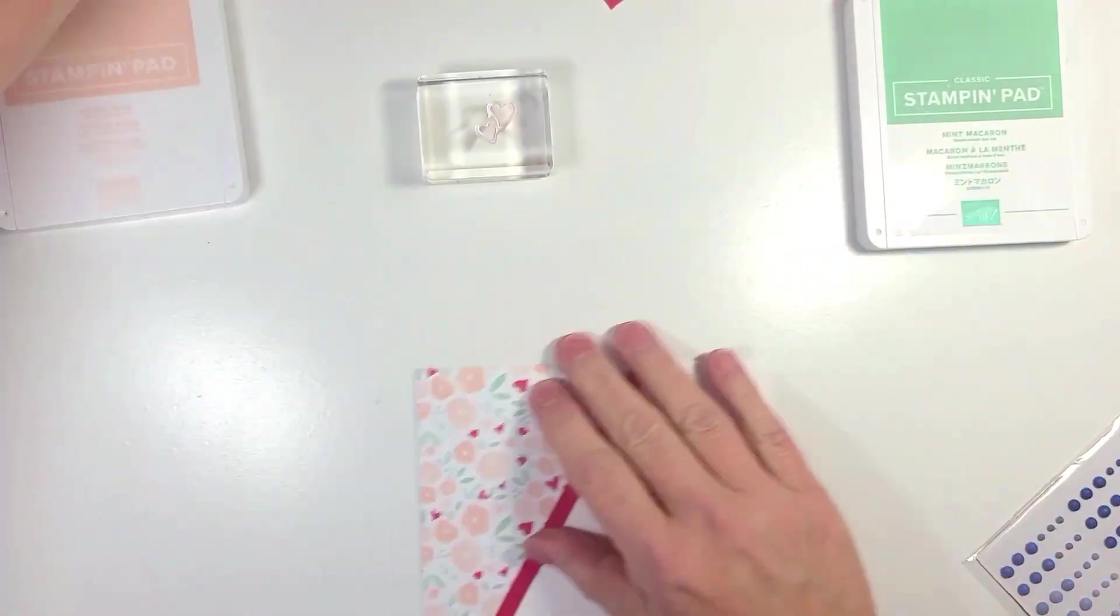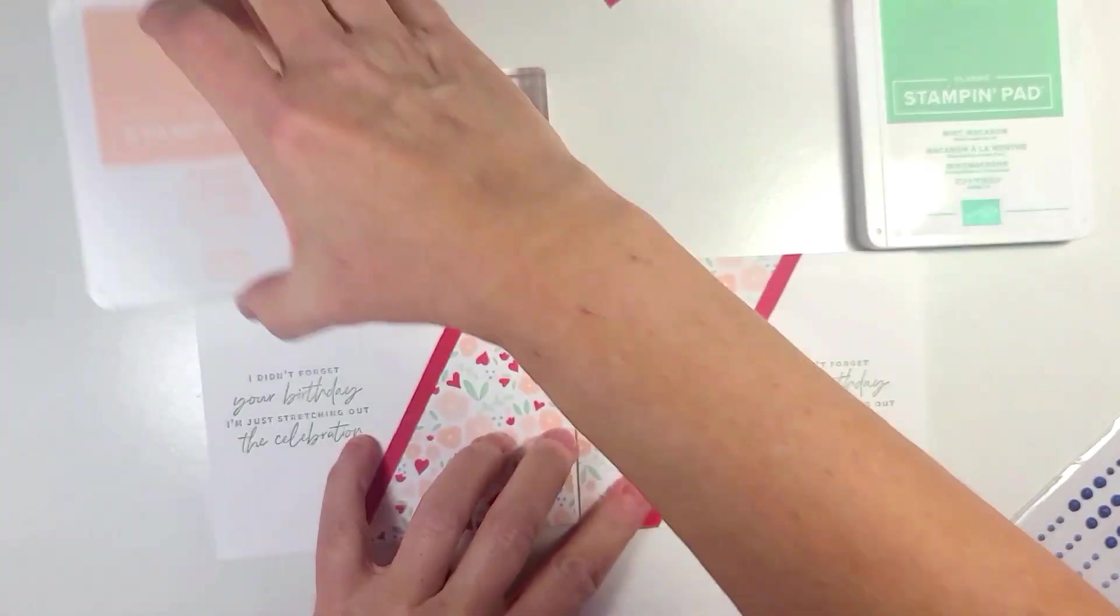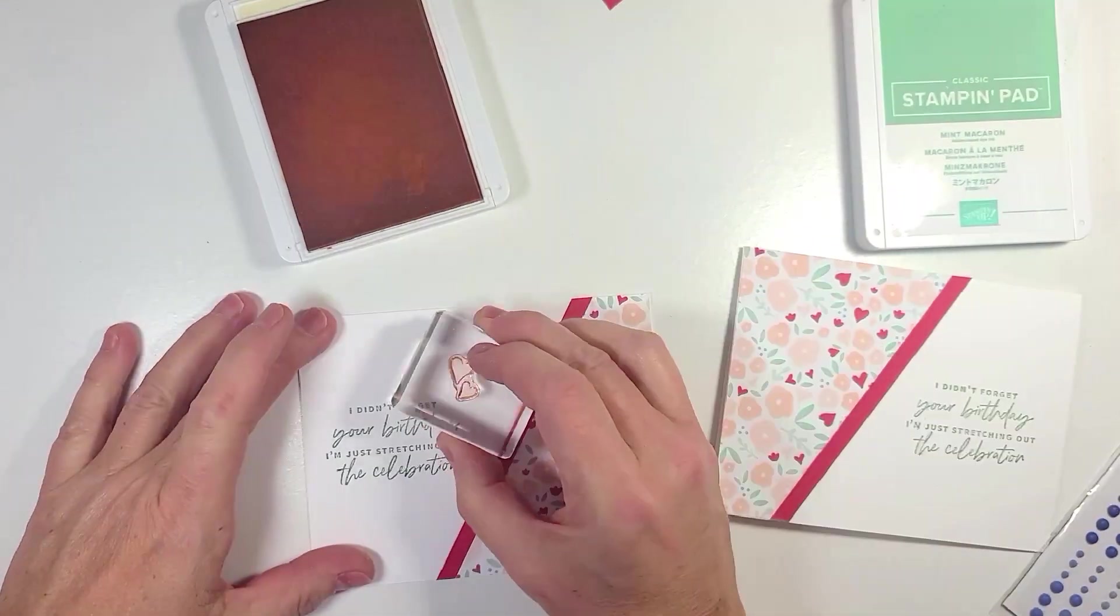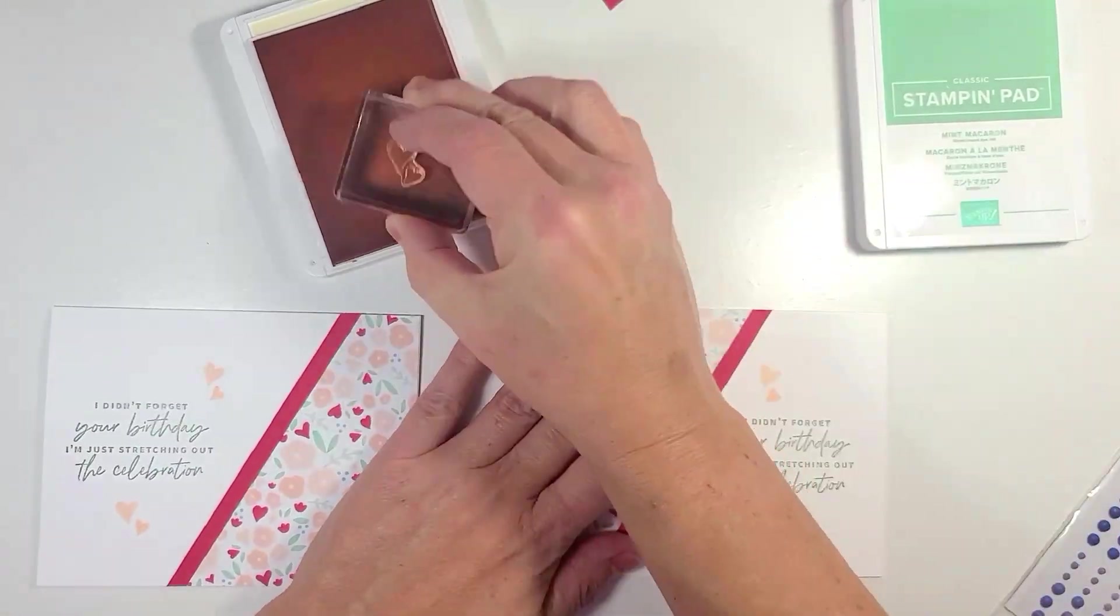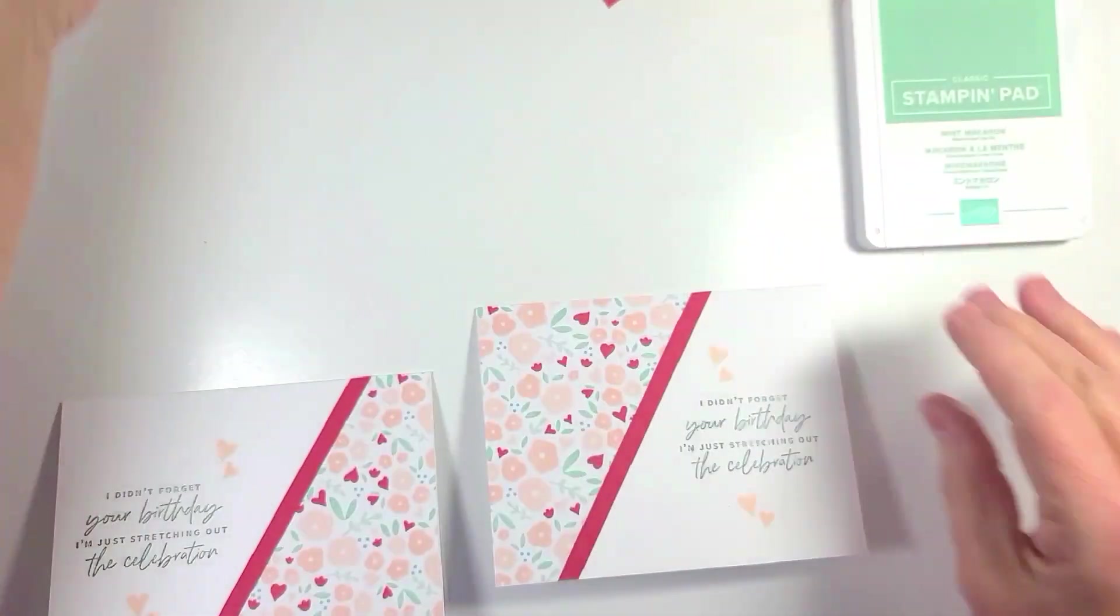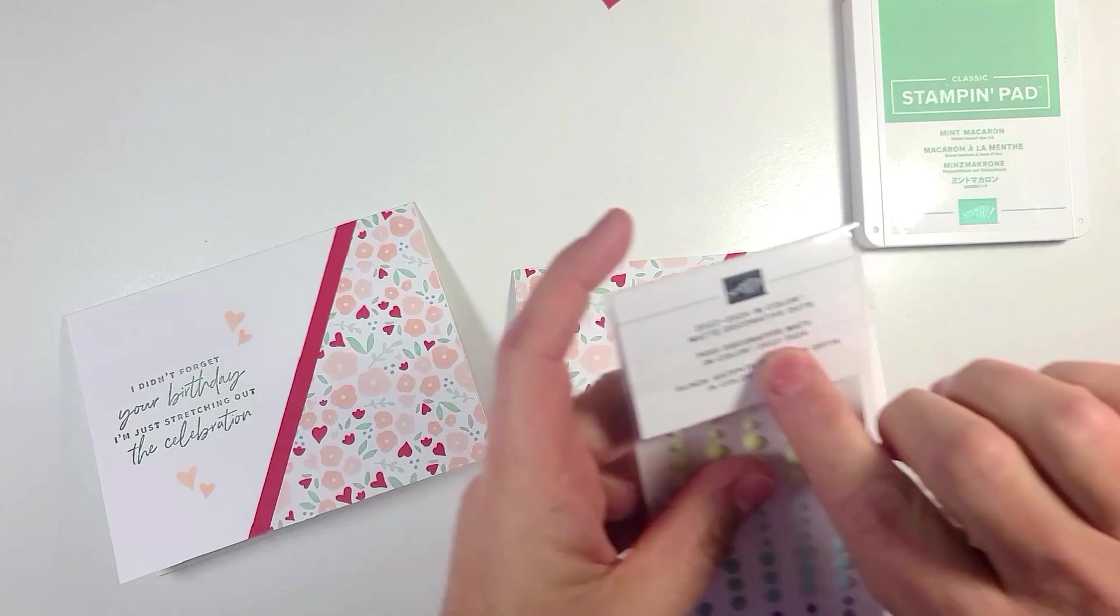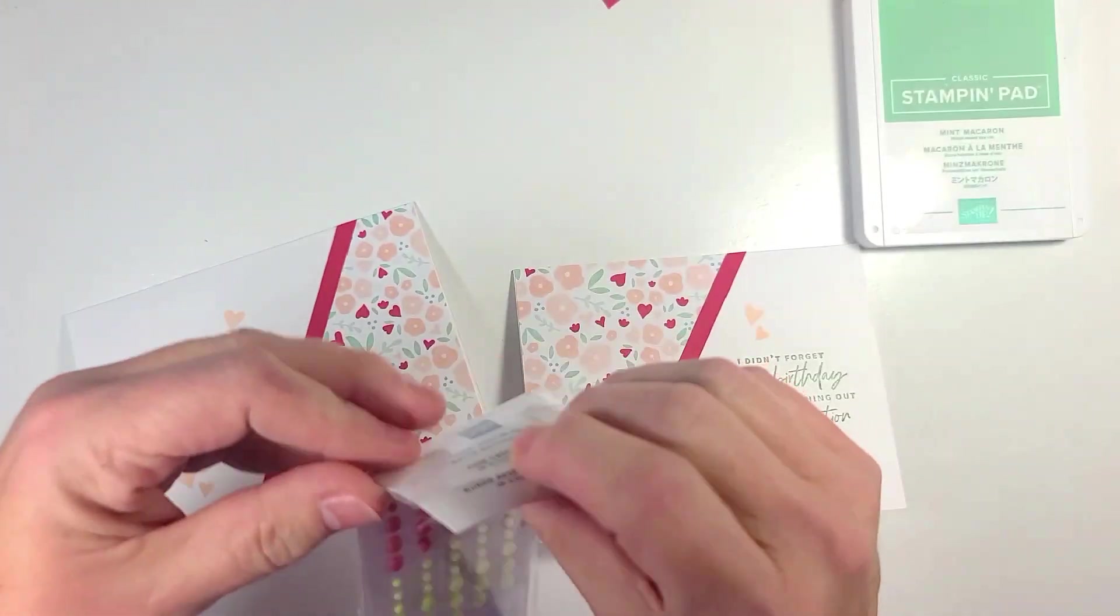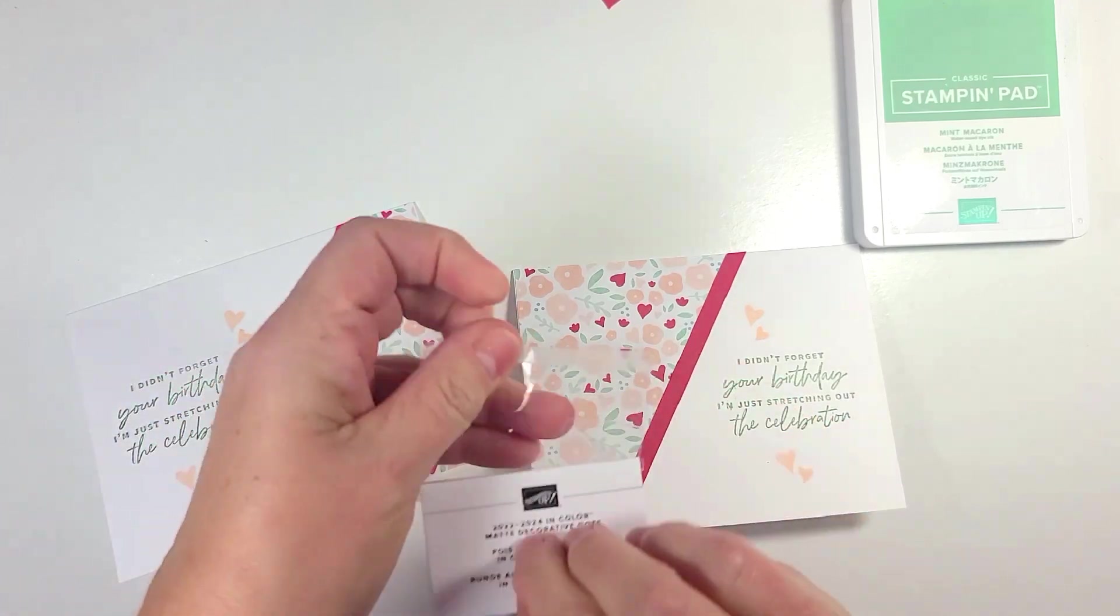Next we're going to come in with our hearts and we're just going to stamp a couple of those on the front. And then last we are going to bring in our 22 through 24 in color dots. We're going to use our sweet sorbet.